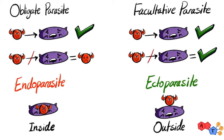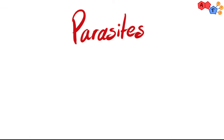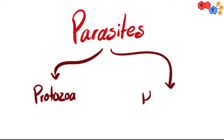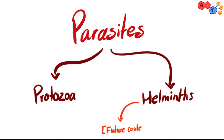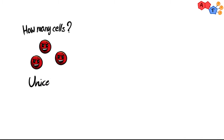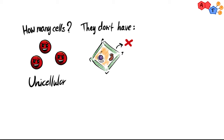Endo means inside and ecto means outside. The parasites can be divided into two major groups: the protozoa and the helminths. In this video we'll just talk about the protozoa. The helminths are simply worms. The protozoa are single-celled eukaryotes; they don't have cell walls and can form double membranes or cysts to become more resistant.